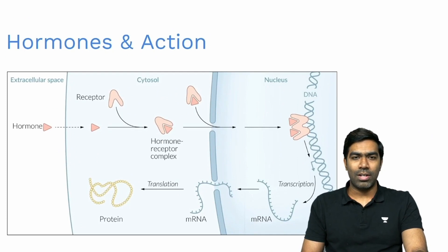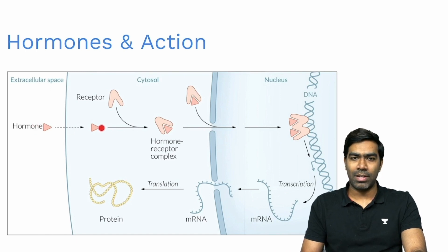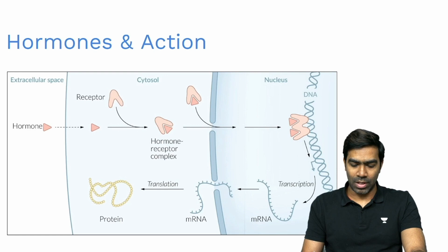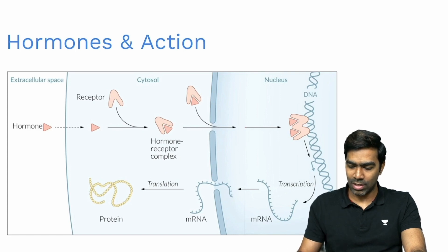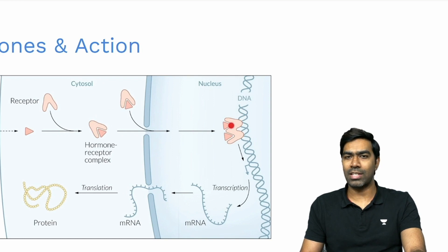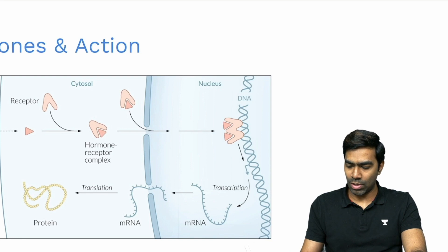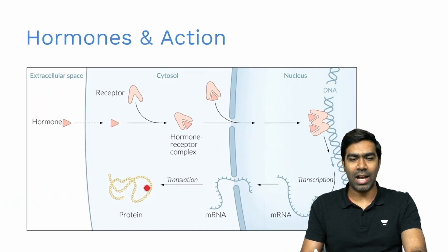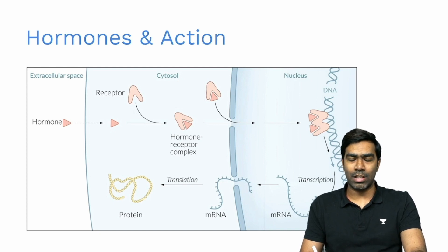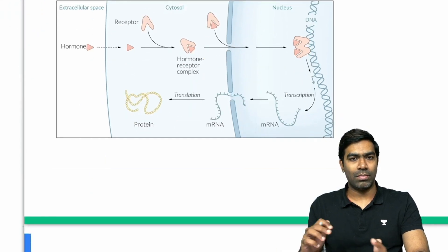Here's how lipophilic hormones work: the lipid-soluble hormone crosses the cell membrane and binds to an intracytoplasmic receptor, forming a hormone-receptor complex. This complex migrates to the nucleus, where it binds to the hormone-responsive element (HRE). This increases or decreases transcription of the target gene. The resulting mRNA exits the nucleus and is translated in ribosomes to produce a protein, causing genetic expression.